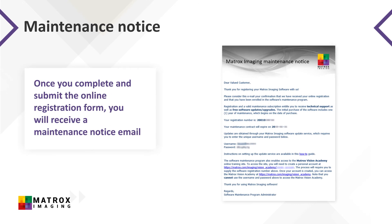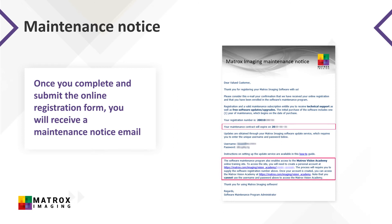The email is sent to the email address entered on the registration form. In this email, you'll find important information such as the date your software maintenance will expire and a link to set up a personalized account for the Matrox Vision Academy training portal. Note that when creating an account for Vision Academy, you'll need your registration number.